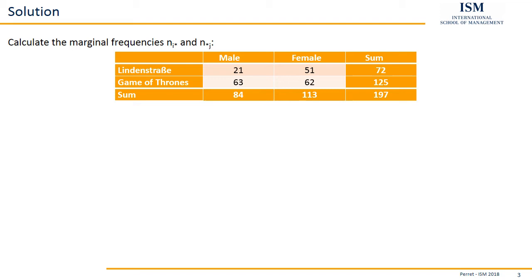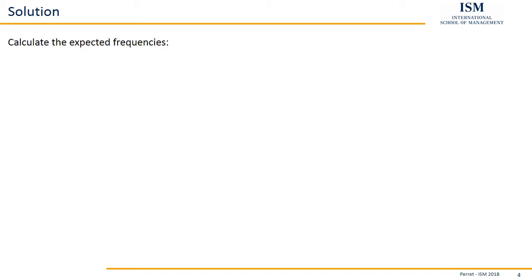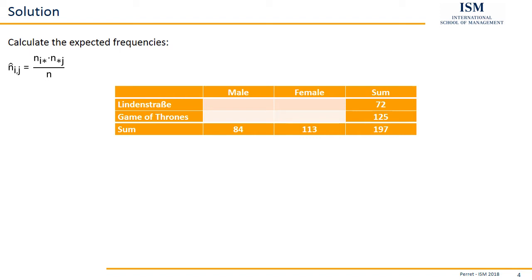In the next step, we are going to calculate the expected frequencies using the following formula. For this, we copy the table we constructed before, contingency table, but we only copy the marginal frequencies because we will need them to actually do the calculations. What does the formula for the expected frequency mean? For each cell, each of the four blank cells we have here, we are going to multiply the corresponding marginal frequency according to the row and the corresponding marginal frequency for the column with each other and divide this by the overall amount of observations. So if we consider Lindenstrasse and male, we multiply 72 with 84 and divide by 197, giving us an approximate value of 30.7.